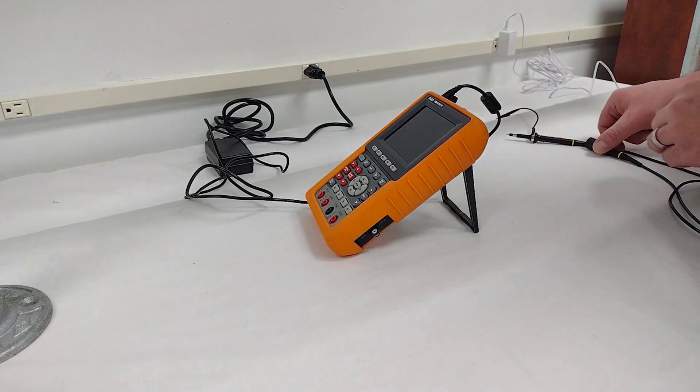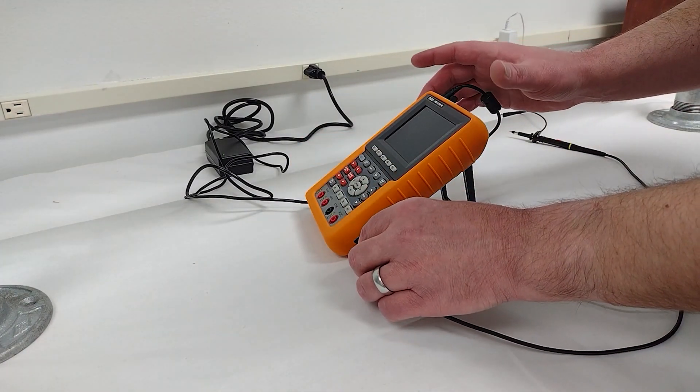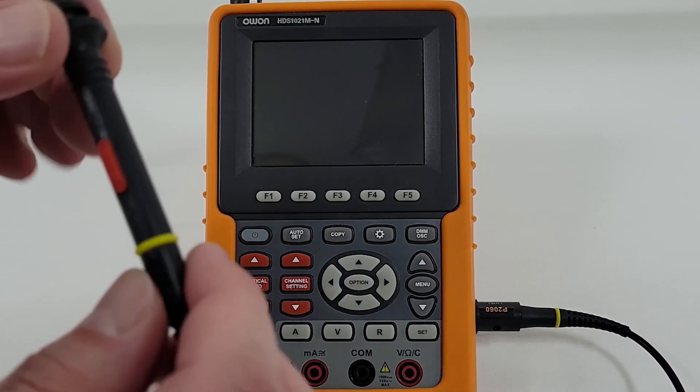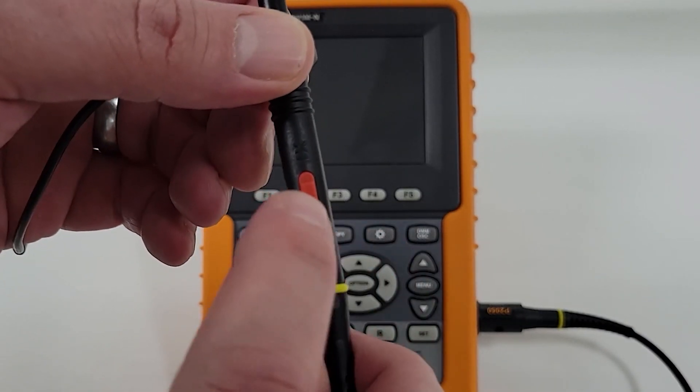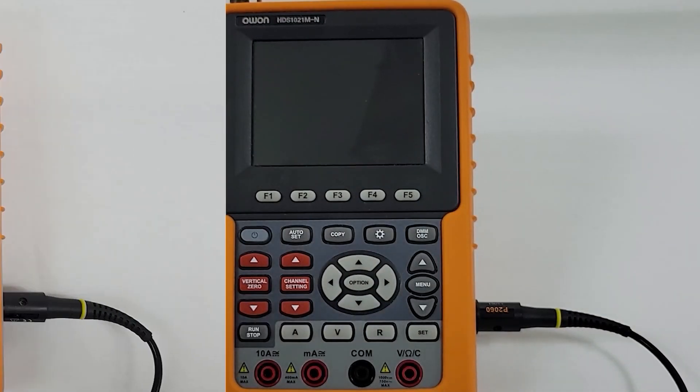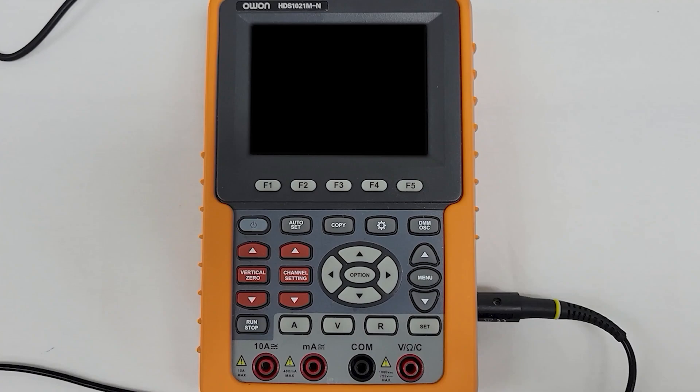First thing we need to do is install the probe. After it's been installed, check the probe switch setting. The probe switch should be set to X10 for the higher voltage iRange devices. For all other devices, use the X1 setting.